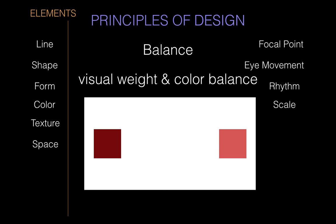Here we have two objects of the same size and same color, but if you were to place the image on a scale with the fulcrum at the very center, it might feel like it wants to tip slightly to the left. This is because more saturated, darker images tend to carry more visual weight — they feel heavier. So even though there is the same amount of space around them, the left side feels a little bit heavier than the lighter right side. Scale has the same effect — larger images look heavier. Whether or not that's always the case physically, visually we tend to expect something larger to be heavier.